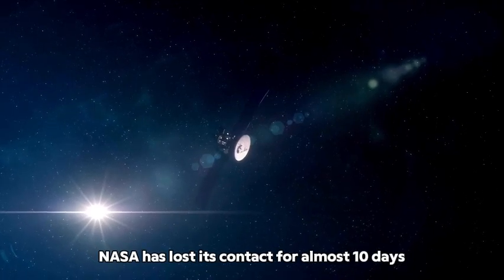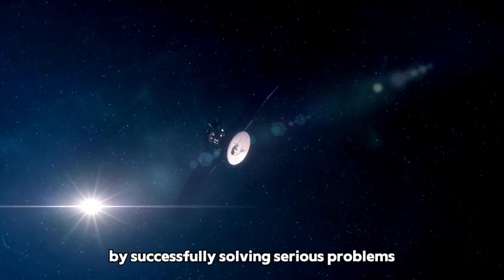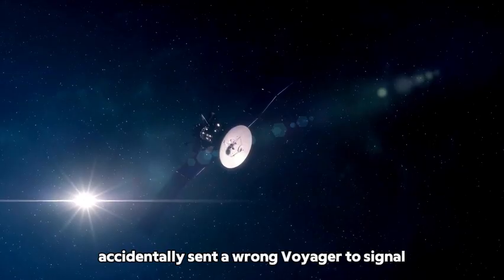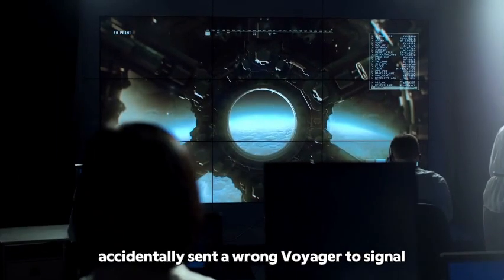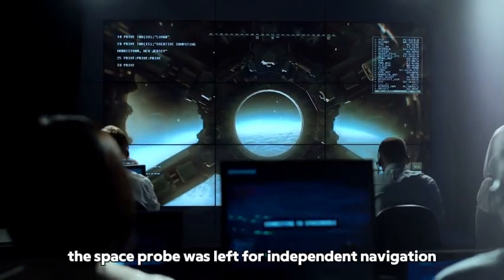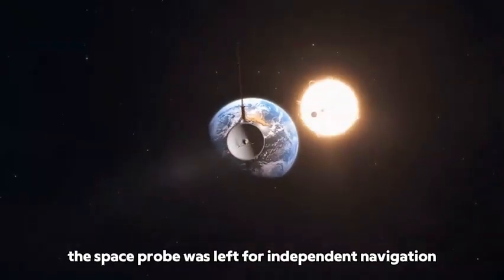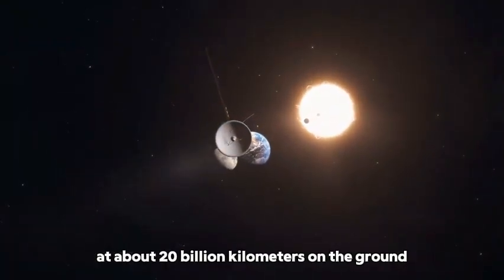NASA lost contact with Voyager 2 for almost 10 days after an engineer accidentally sent a wrong signal. As a result, the space probe was left for independent navigation at about 20 billion kilometers from the ground.